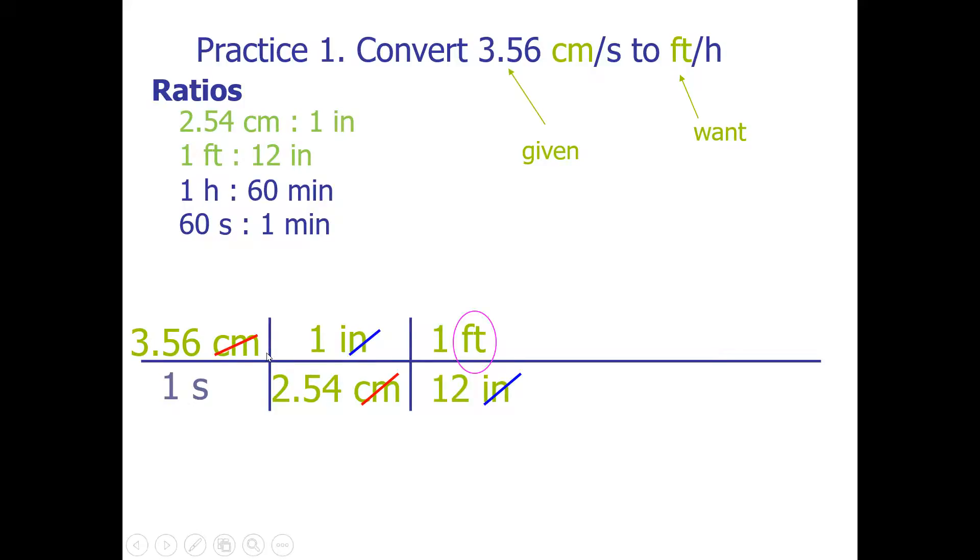Now for the denominator, I have seconds on the bottom. I need seconds in the top because I need my units to cancel diagonally. This is where I'm going to take my 60 seconds and put it in the numerator. The other side of the ratio is 1 minute. And now I'm going to make my units cancel out and hours in the bottom.